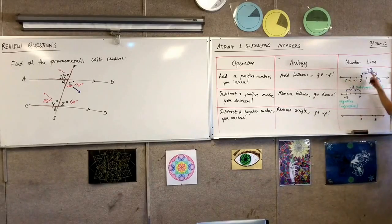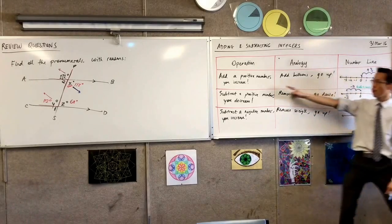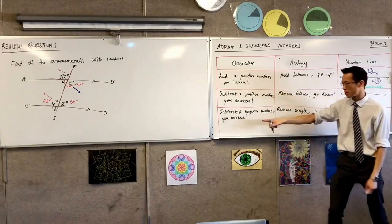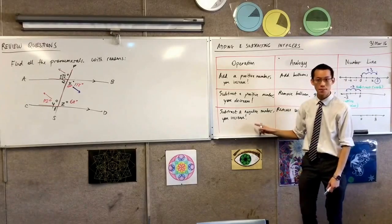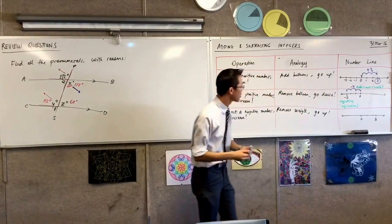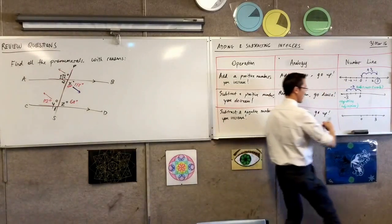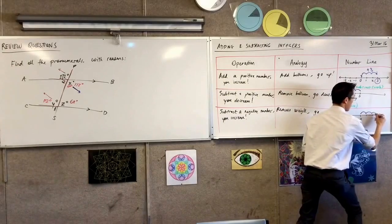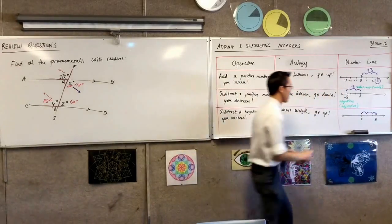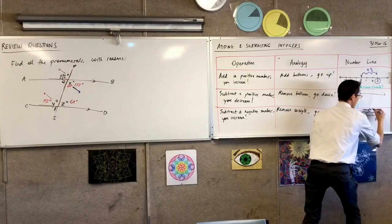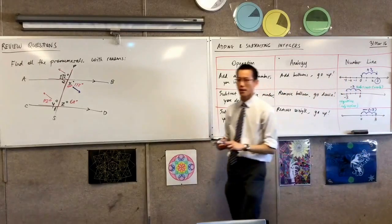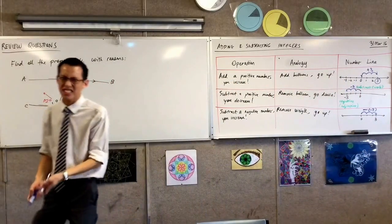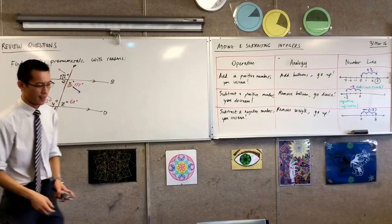But importantly, I'm not doing this. I'm not adding a positive number. I'm doing something else. I am subtracting a negative. So when I go to the right, I'm actually going one, two, three. But the operation and the number are different. I'm subtracting a negative number. You end up at the same spot. You're actually doing something different though.